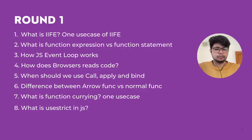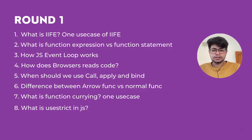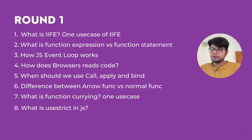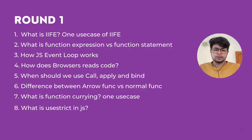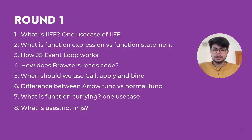The sixth question was about the difference between a normal function and an arrow function, asking for two or three key differences. Seventh was what is function currying and one use case of when we would use it. Eighth was what is 'use strict' in JS — what does it do or what is the benefit of using 'use strict' in JS.